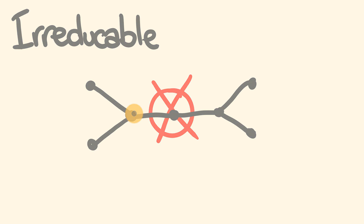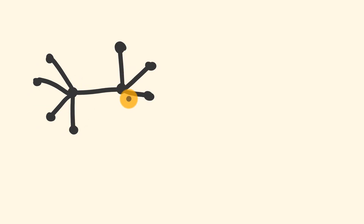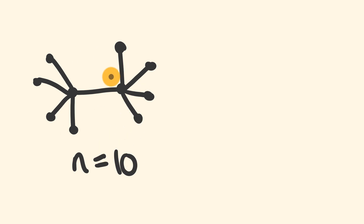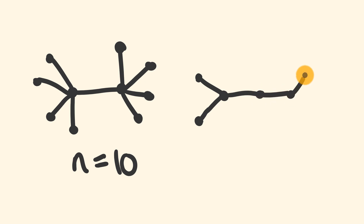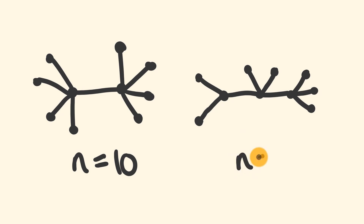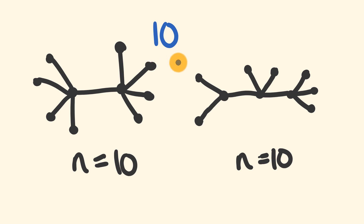I'm going to start off two examples to show you. For example, we could have this situation where we have 5 dots on one side and 5 dots on the other — N equals 10, irreducible and unique. Another example might look like a straight line of 10 dots: 1, 2, 3, 4, 5, 6, 7, 8, 9, 10 — also N equals 10, and different from the first. In all, there are 10 unique diagrams to draw. Pause the video and see if you can find all 10 homeomorphically irreducible trees of N equals 10.